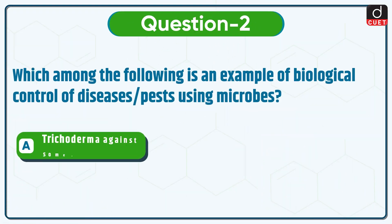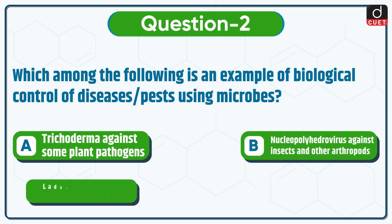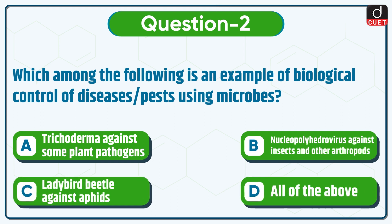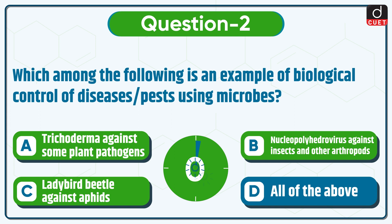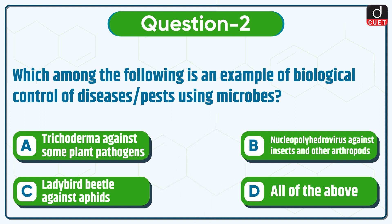Next question: which among the following is an example of biological control of diseases or pests using microbes? Trichoderma against some plant pathogens, Nucleopolyhedrovirus against insects and other arthropods, Ladybird Beetle against aphids, or all of the above? The correct answer is option D, all of the above.